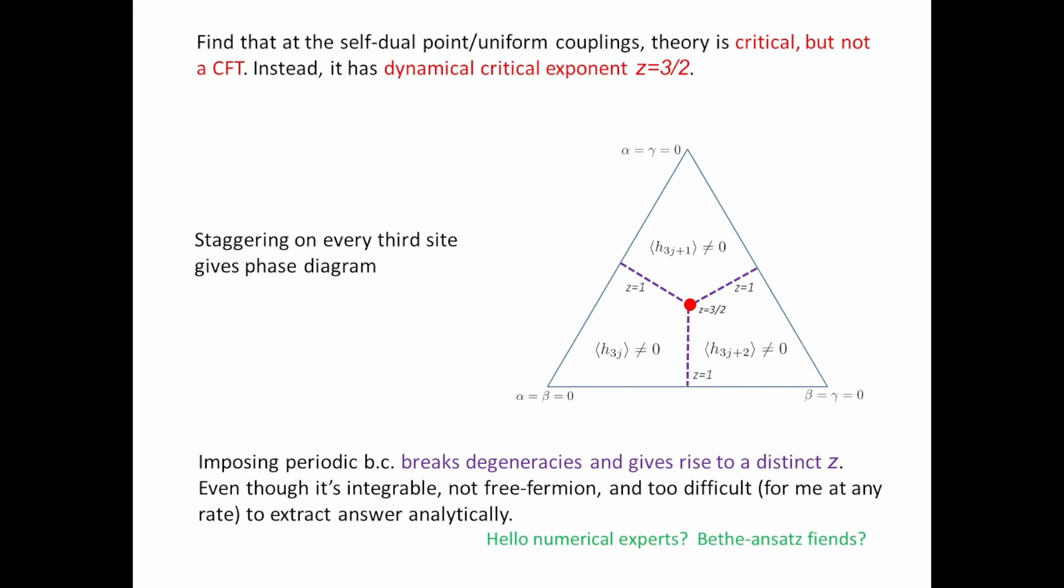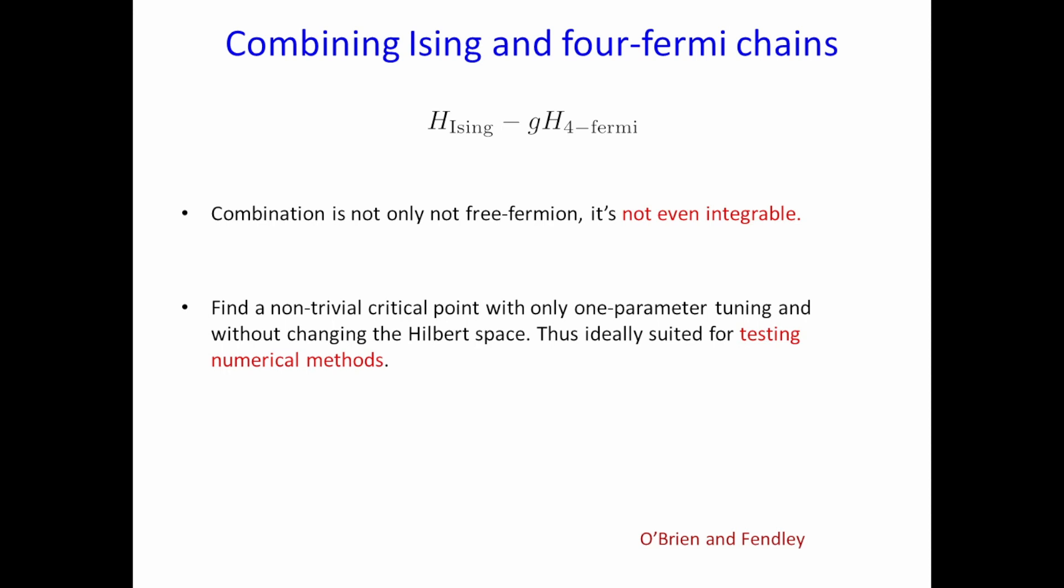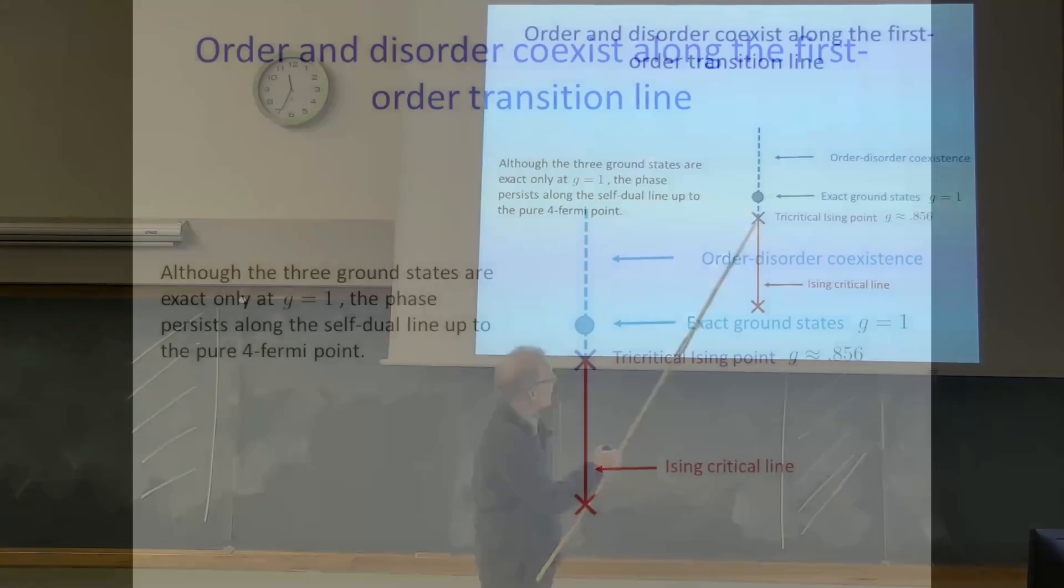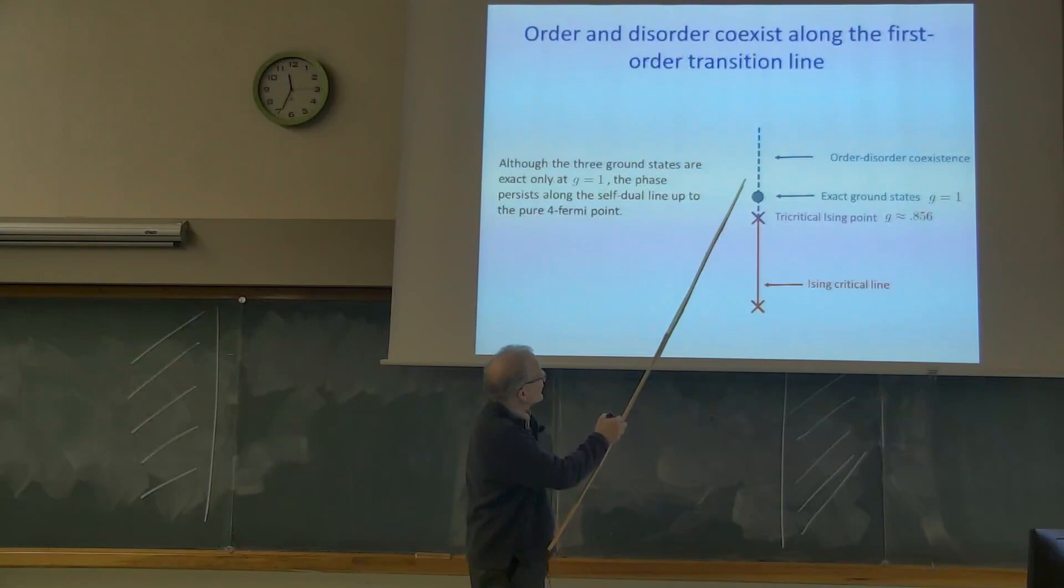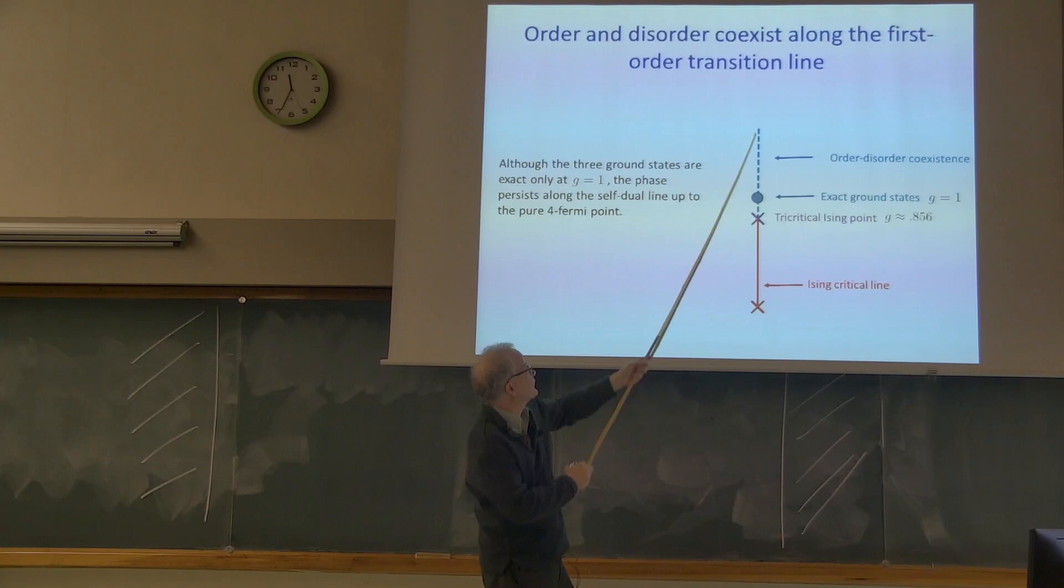This model's integrable, but there's no U1 symmetry, so you can't use all the usual Bethe ansatz stuff. I failed, I wasted a month of my life trying to use integrability on this model. But there's people in this room who know more about integrability than me, and I know a lot. Maybe you can figure out how to get to z equals three. These models, there's other models you can ask me about where you have this thing.